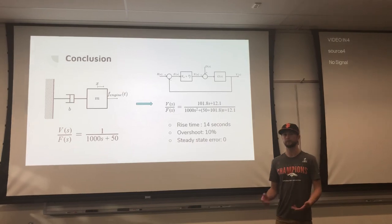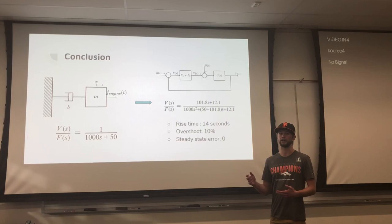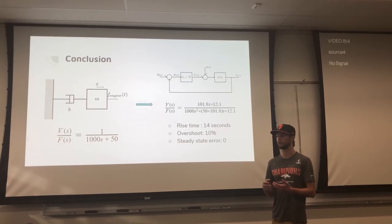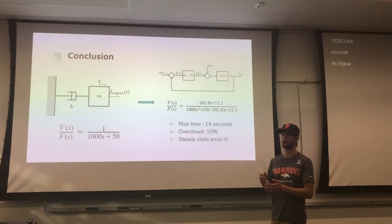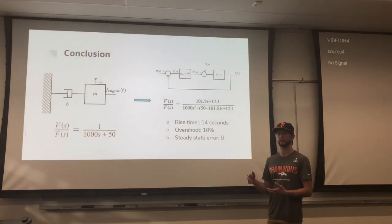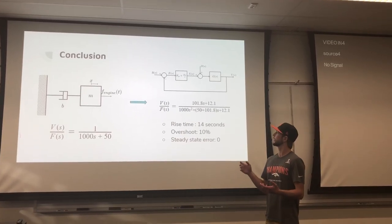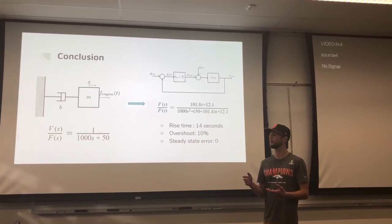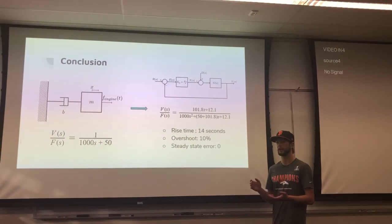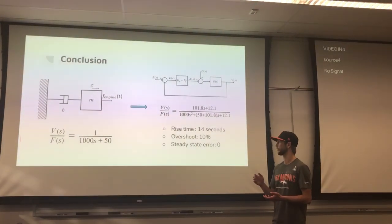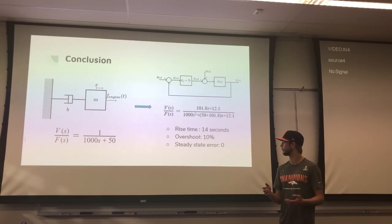After everything's been said and done, we were able to take our system, the autonomous car cruise control, model the entire system in a block diagram, get a transfer function from this block diagram, and design a PI controller that can achieve our goals, which is rise time under 20 seconds. We got 14 seconds and a reasonable overshoot so you're not speeding too much.